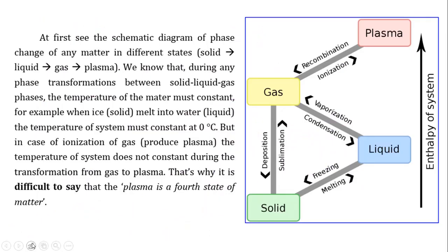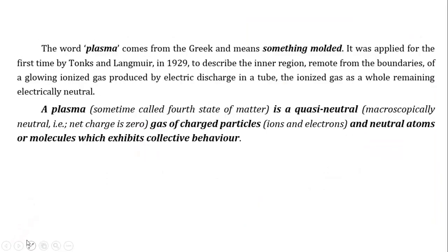To recap: solid is heated to become liquid, then heated to become gas, then heated or given more energy — enthalpy increases — and it becomes ionized plasma. The reverse processes are: recombination (plasma to gas), condensation, freezing, deposition, and sublimation.